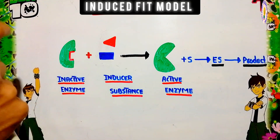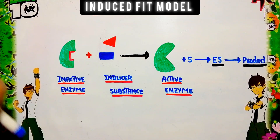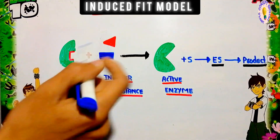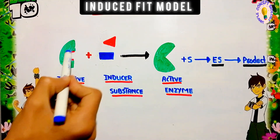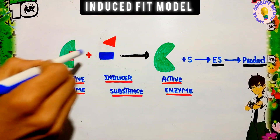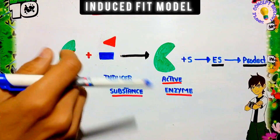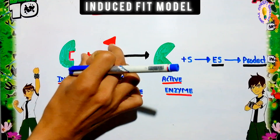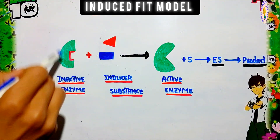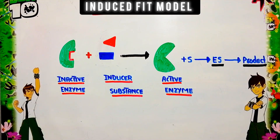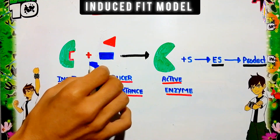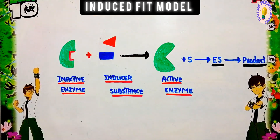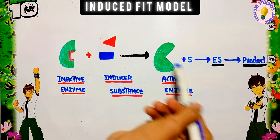You can see here the active site of the enzyme and the structure of the substrate — these are not complementary to each other. In the lock and key model, the shape of the substrate and the active site of the enzyme are complementary, but in this case their shapes are not complementary. To fix the substrate to the active site of the enzyme, we require the inducer substance, which reacts with the active site and causes changes, modifying the active site of the enzyme.